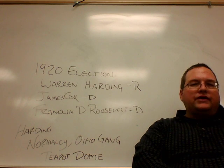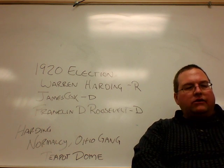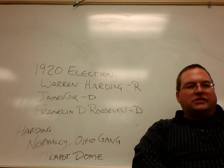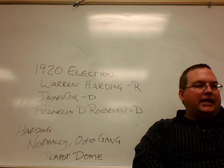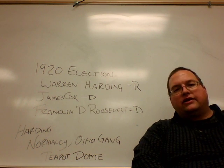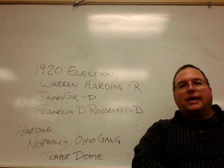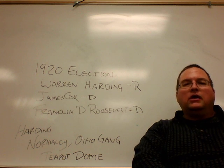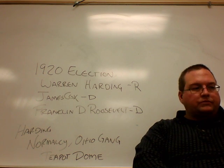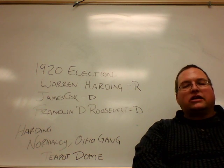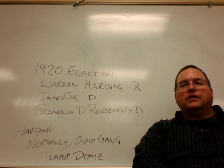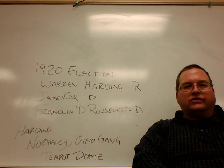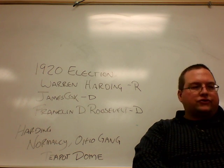Over on the Democrat side, Ohio Governor James Cox won the Democratic nomination over former Secretary of the Treasury William McAdoo, who was a Wilson supporter, and Attorney General Amos Will Palmer, who really did himself no favors by starting the First Red Scare.